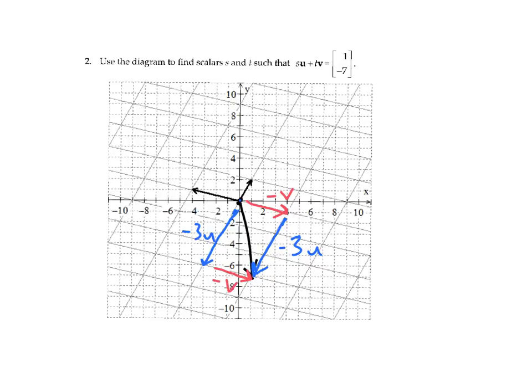So either path that we take, it looks like our multiple of v, which is t, is negative 1. And our multiple of u, which is the s value we were asked to find, is negative 3.